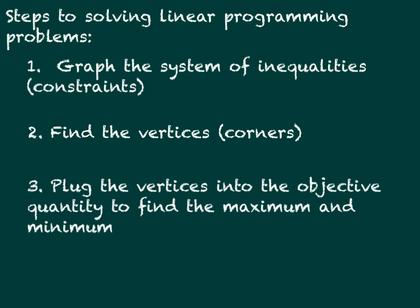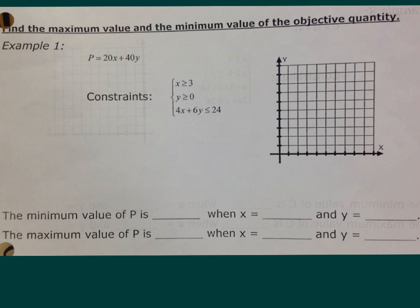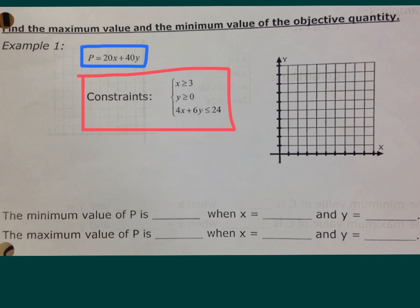Let's do an example. Here's example one: find the maximum and minimum value of the objective quantity. The objective quantity is P — probably profit — equals 20x plus 40y. These are your constraints, your system of equations. Here's a graph to plot them on, and then I ask you what the minimum and maximum values are at the bottom.